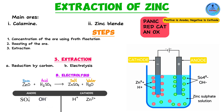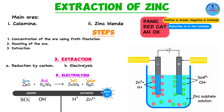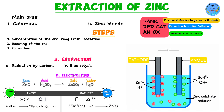At the anode, oxidation takes place and hydroxide ions are discharged, forming oxygen gas and water. At the cathode, reduction occurs and zinc ions gain electrons to form zinc metal, which is deposited on the cathode. At regular intervals, this zinc metal is stripped off the cathode, giving us pure zinc metal through the electrolytic method.